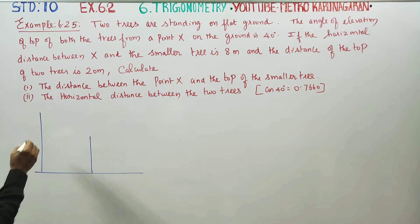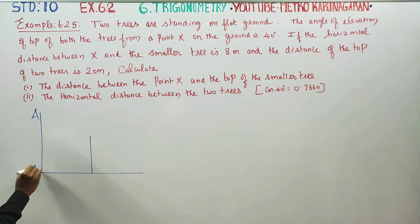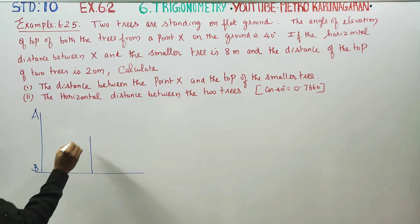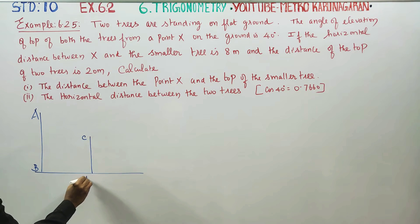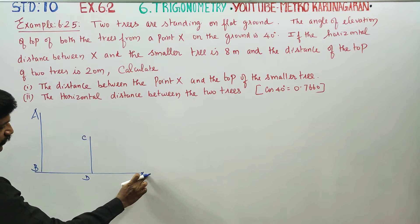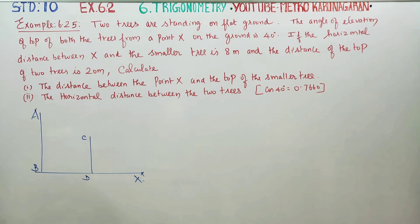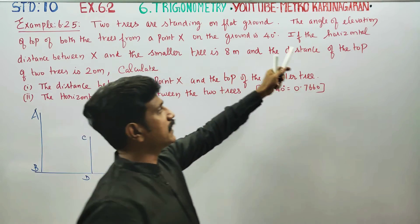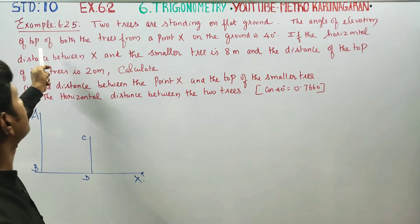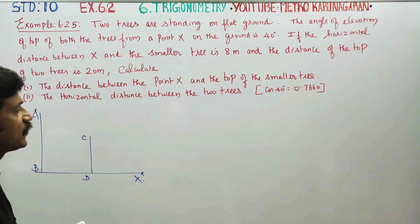Now there are two trees. AB is the big tree and CD is the small tree. X is one point on the ground. The angle of elevation of the top of both trees from point X on the ground is 40 degrees.